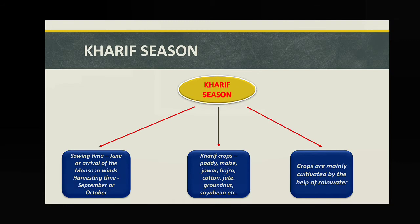First, Kharif season. The sowing time is generally in the month of June, but it is not always fixed — it depends on the arrival of the monsoon wind. In India, there is no confirmed date for monsoon arrival; it is irregular, sometimes early, sometimes late. Generally it arrives in June and crop cultivation begins then. Harvesting time varies from crop to crop but is mainly in September or October.